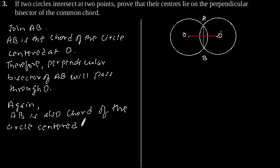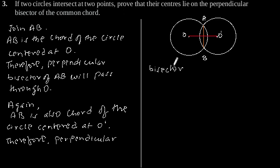Therefore, perpendicular bisector of AB will pass through O'.